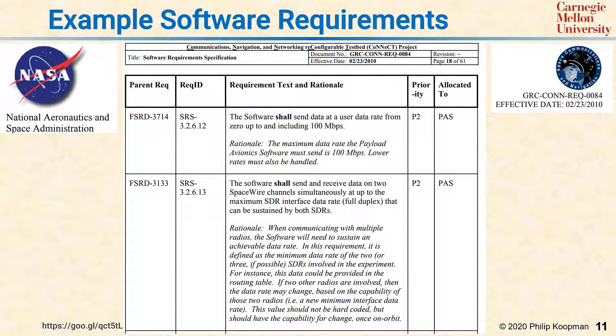In this case, the top row is SRS — Software Requirements Specification — 3.2.6.12, which means there are a lot of requirements here. The next column is Requirements Text and Rationale. For example: 'The software shall send data at a user data rate from zero up to and including 100 megabits per second.' Below that is a rationale explaining why that requirement is important and what it does.